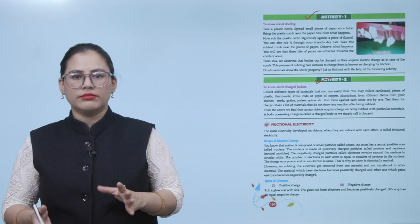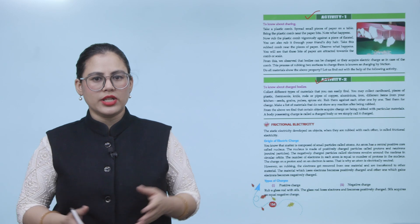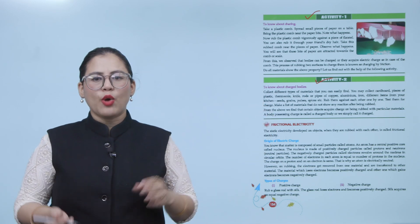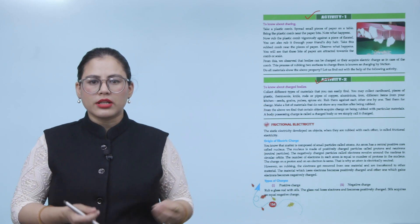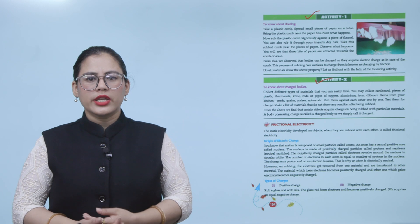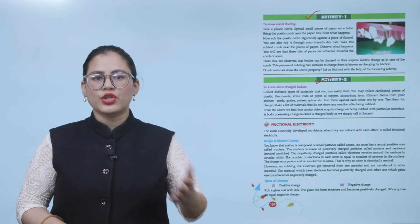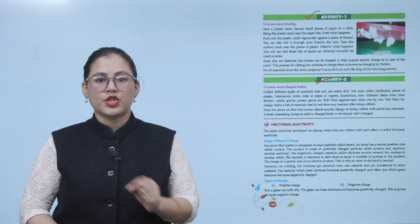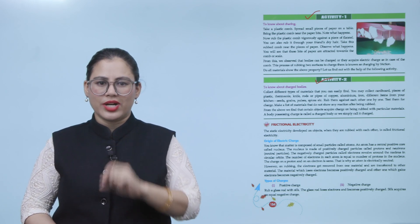Look at any material you can easily find — take any object and rub it against another. After that, you will see which one is charged and which is not. You can make a list of what reaction has been shown after being rubbed. Any body that possesses charge is simply called a charged body.